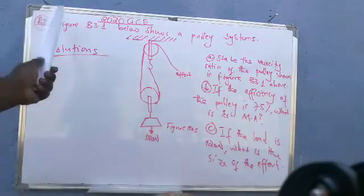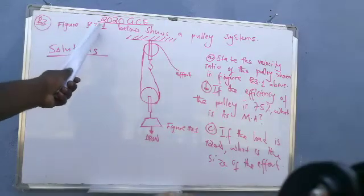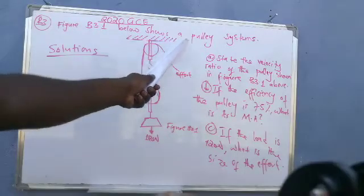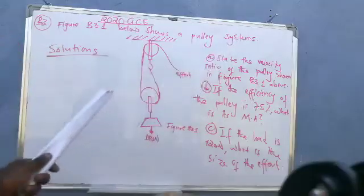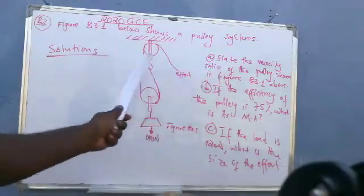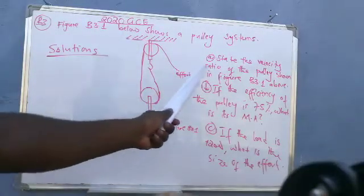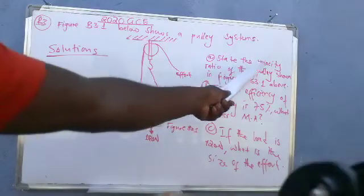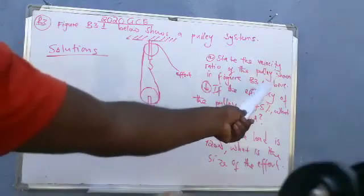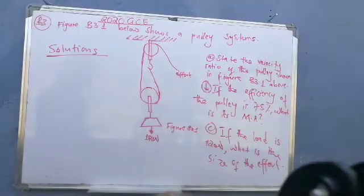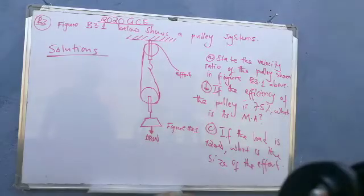The question reads: Figure B3.1 below shows a pulley system. So this is the pulley system. The first question is, state the velocity ratio of the pulley system shown in Figure B3.1 above. So how do we state the velocity ratio?